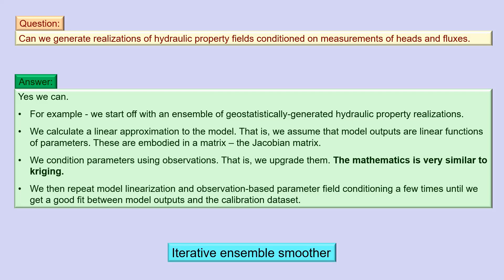The way to do that is through the methodology encapsulated in an iterative ensemble smoother, and you can do this by using PESTPP-IES — a member of the PEST++ suite, downloadable from the USGS GitHub site on which this and other members of the PEST++ suite are available.